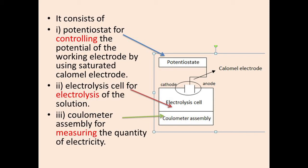The electrolysis cell consists of the cathode, anode, and electrolyte. It is used for the electrolysis of the solution. The third component is the Coulometer Assembly, which is used for measuring the quantity of electricity, that is the charge passed during the reaction.